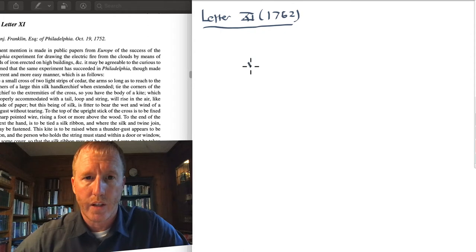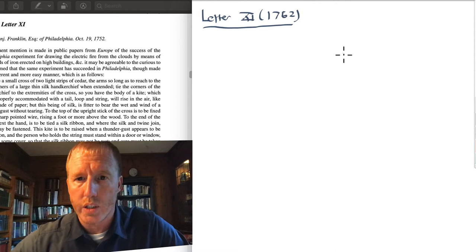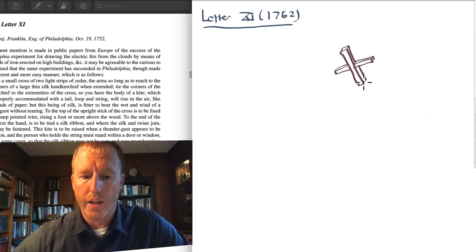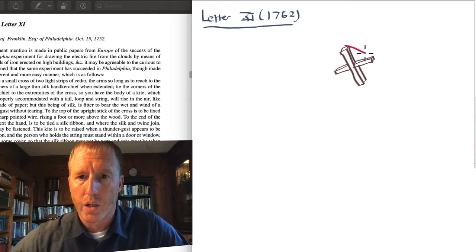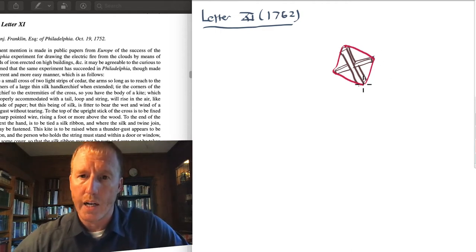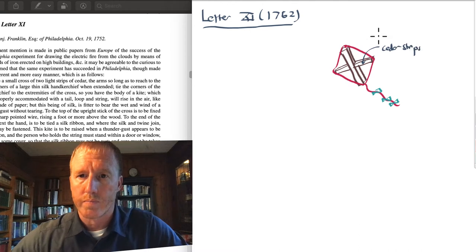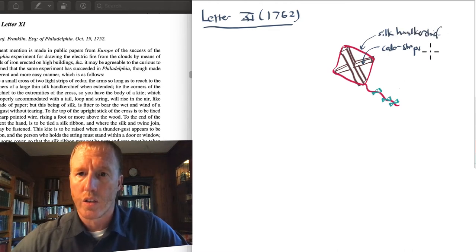He mentions that you take a couple of wooden cedar strips, like this, that form a cross. And draw it in a three-dimensional form here. And then, wrapped around this wooden cedar strip, you stretch a silk sheet. He makes this out of silk so that it's more waterproof. And then behind the silk, he also drags a tail with some ribbons tied to it. So these are the cedar strips. This is the silk handkerchief. This is the tail with the ribbons.